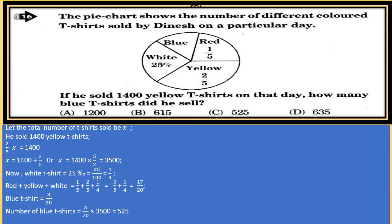The whole pie chart is the total number of t-shirts. If we subtract the red, yellow, and white from the total, we get the blue t-shirt part. Blue t-shirt will be 3/20, because out of 20, 17 parts are occupied by red, yellow, and white t-shirt, so 3 parts are left for blue. Number of blue t-shirts = 3/20 × 3500 = 525.